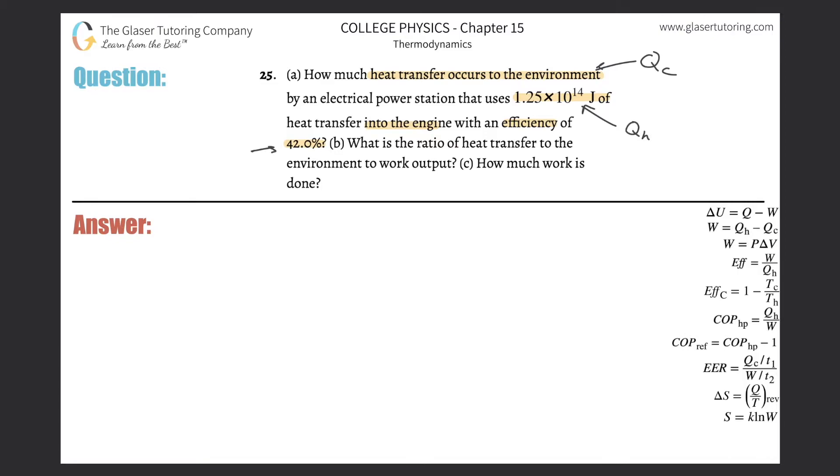The efficiency is 42 percent. What are they asking? They're asking us to calculate Q sub c. I need to figure out a relationship between these three. The efficiency I'll label as e is equal to the work output by the engine divided by the heat put into the engine, aka the hot reservoir.